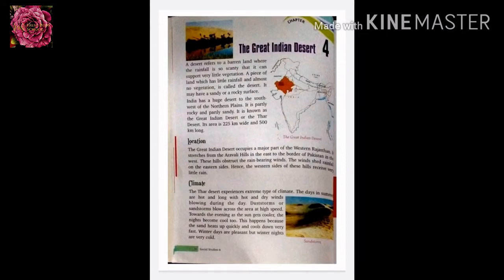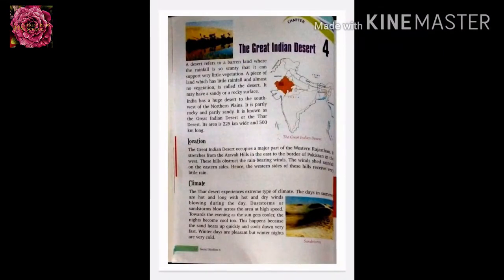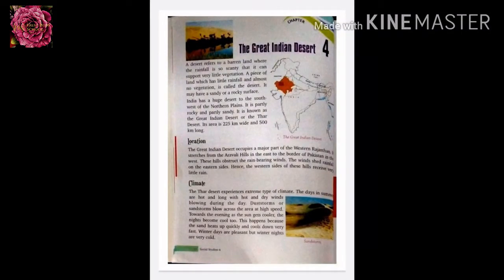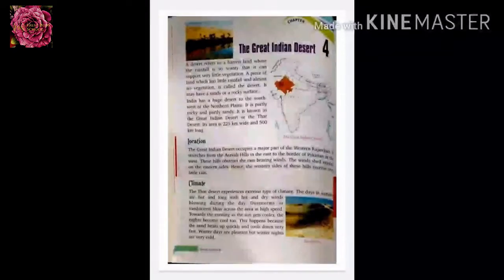What is the desert? The desert refers to a barren land where the rainfall is so scanty that it cannot support very little vegetation. A piece of land which has little rainfall or almost no vegetation is called the desert. It may have a sandy or rocky surface. A land where there is no rain or very low rainfall and there is no vegetation — we can say it is a desert.